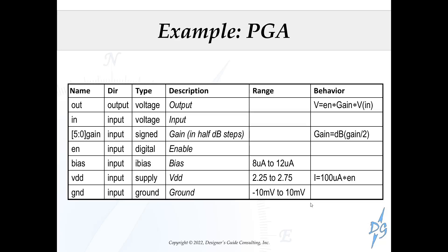An example spec is shown here for a Programmable Gain Amplifier. This block has seven different ports: an output voltage, an input voltage, a 6-bit word for gain, an enable pin, a bias pin, a supply pin, and a ground pin. The behavior can be easily described as doing a dB-to-voltage gain conversion, then taking that gain and multiplying it by the input and the enable to get the voltage output. In addition, we can model the supply current and add range limits for the other inputs—bias, supply, and ground—which will ultimately turn into assertions.